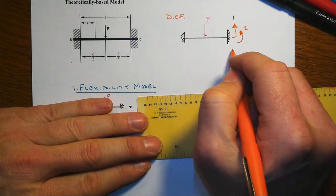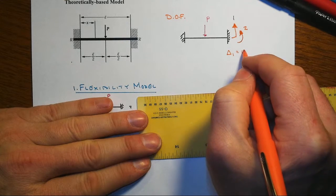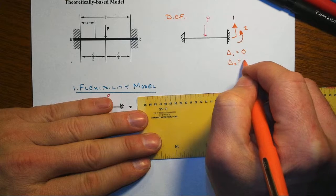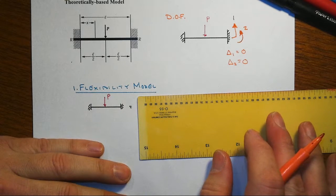Looking ahead here, we know that the displacement in the one direction will turn out to be zero. That would be the translation, and the displacement in the rotation at the end needs to also be zero in order to conform with the fixed end that we actually have out here.